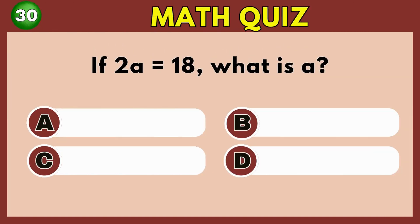If 2A equals 18, what is A? Option A. 9.